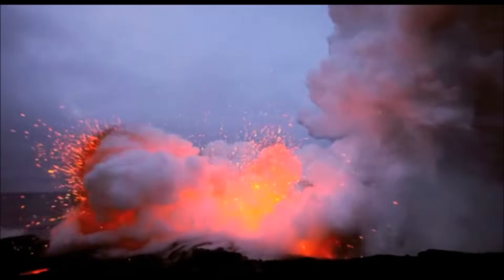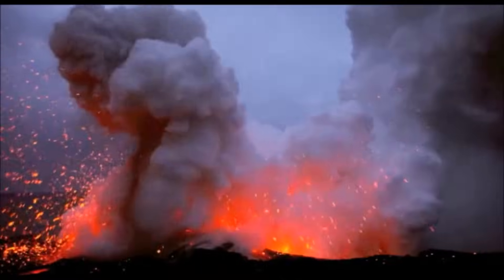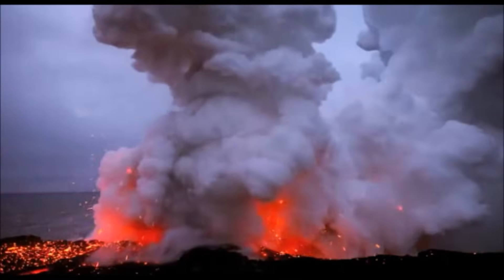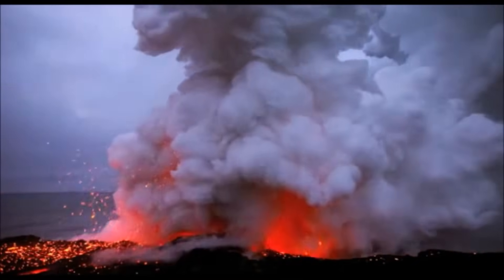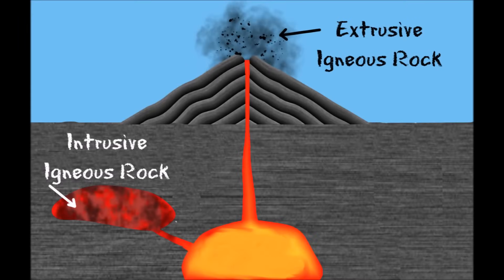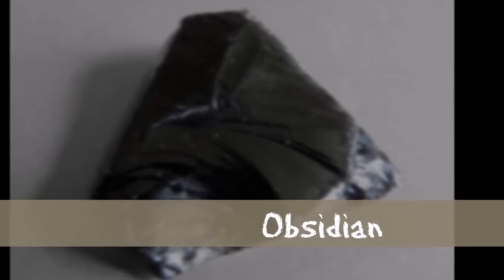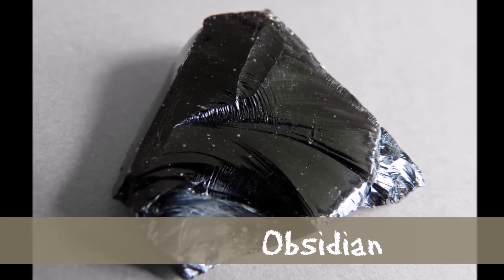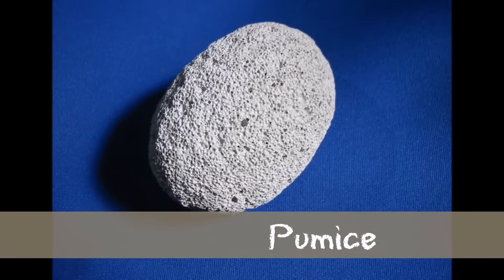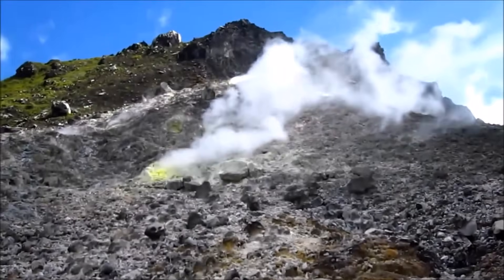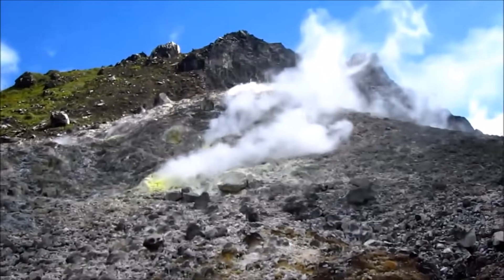Other times, lava cools when it comes to the surface in a volcanic eruption. This forms extrusive igneous rock. Some examples of extrusive igneous rock are tuff, obsidian, and pumice. Igneous rocks make up about 95% of the Earth's crust.